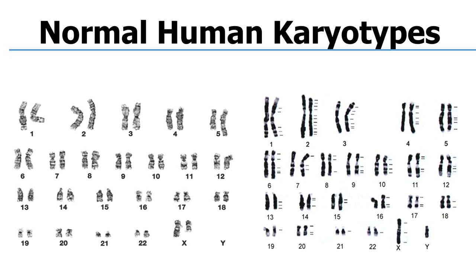This is a normal human karyotype. What you have here are the first 22 chromosomes, what we call the autosomes. The sex chromosomes are the 23rd pair, and they can either be XX — that is female — or XY — that is male.